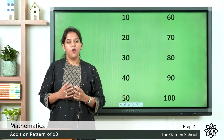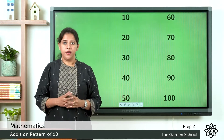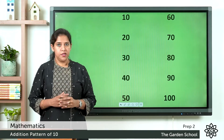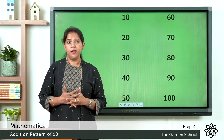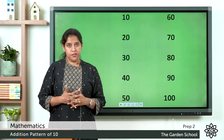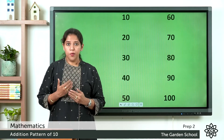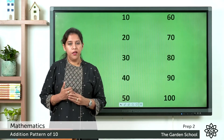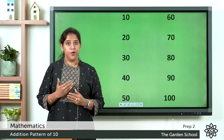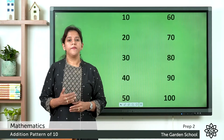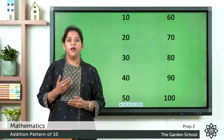So, count the multiples of 10 till 100. We will learn how to do numbers. You should count 10. Multiples of 10 are 10,